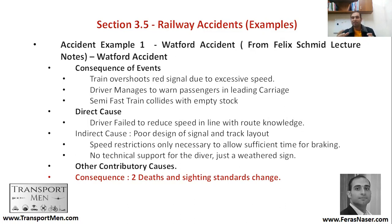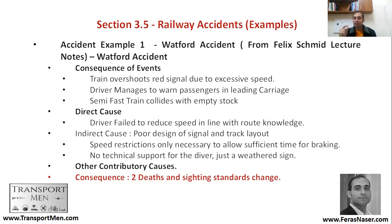There is an accident, but somehow the consequences of that accident have been managed to be reduced. The direct cause of this incident is that the driver failed to reduce speed in line with route knowledge — he could not reduce his speed. The indirect cause is a poor design of signal and track layout; he could not actually see the signal, which is why he could not reduce the speed.